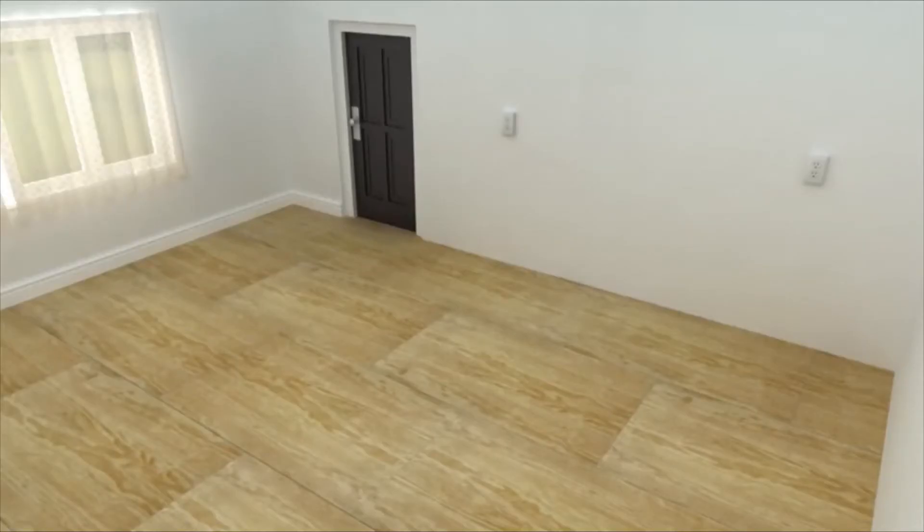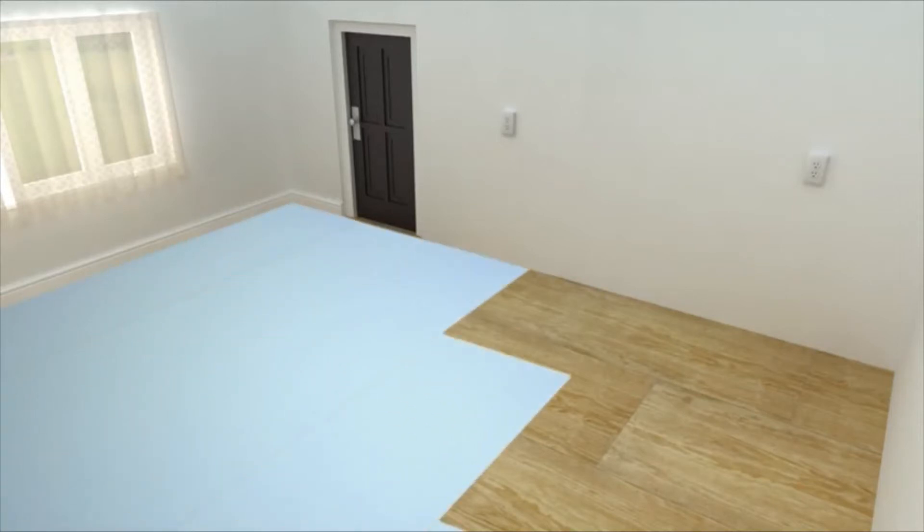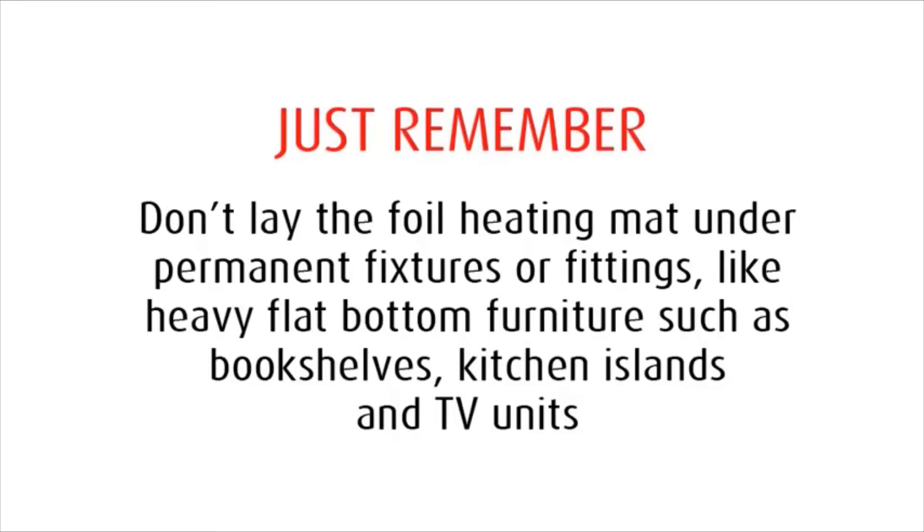Ensure the floor surface is smooth, dry, and free from dust and debris such as staples or nails that may damage the foil panels. Lay down the thermal insulation barrier or the regular underlayment padding provided by your flooring supplier. Remember that Warmup foil heating mats must not be laid under permanent fixtures or fittings like heavy flat bottom furniture such as bookshelves, kitchen islands, and TV units.